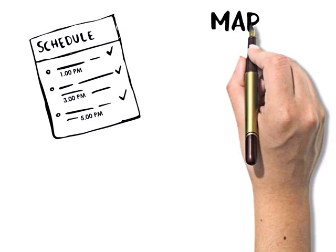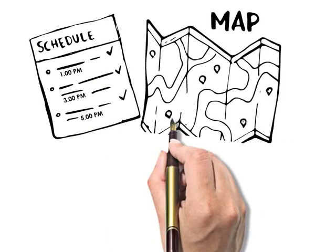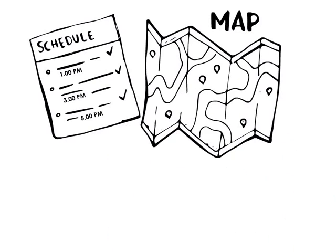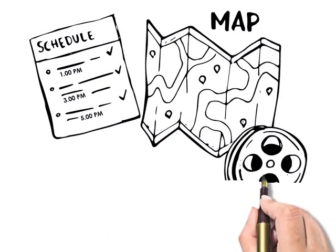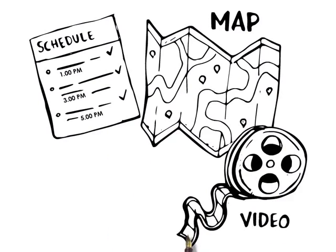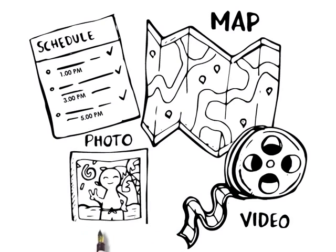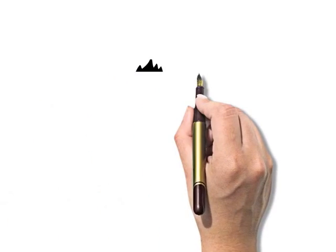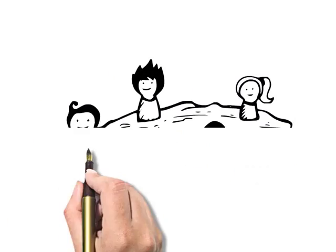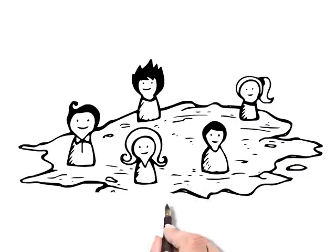In the event app, the user would see basic information like the event schedule, map, photos, and videos. Furthermore, the user can see all other participants, connect to them, and form groups for the race.